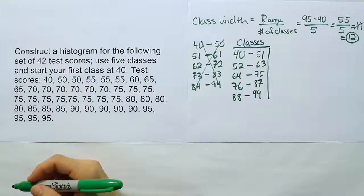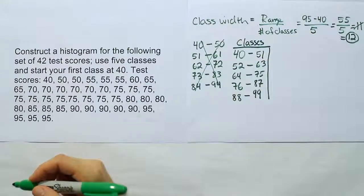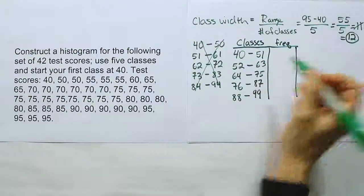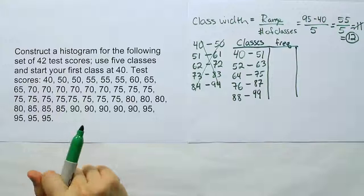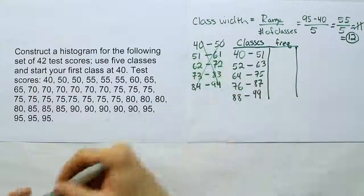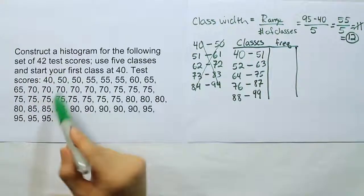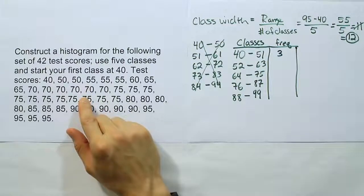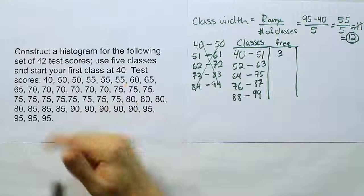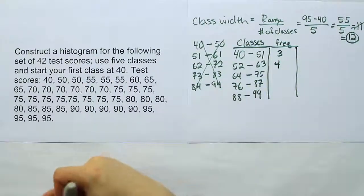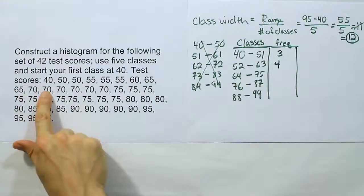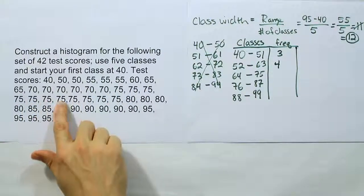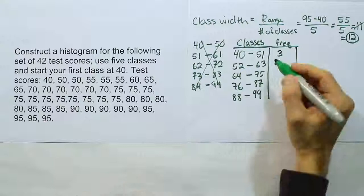From there, the next step of constructing a histogram is to come up with the frequencies. In order to come up with the frequencies, we simply have to count how many of the numbers fall into each of these categories. How many values fall into this first category from 40 to 51? If we count here, three numbers fall into that category. How many fall into 52 to 63? I count 4. How many in 64 to 75? I count 19 of them fall into this category.